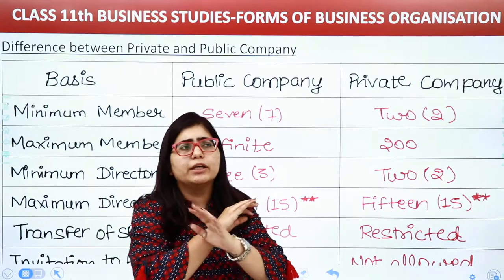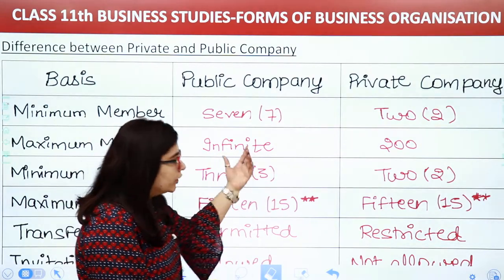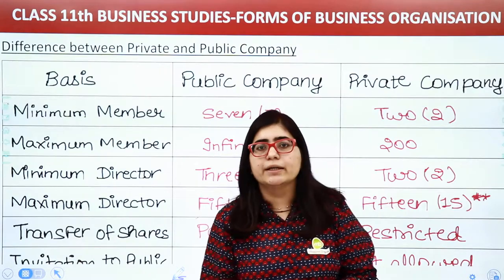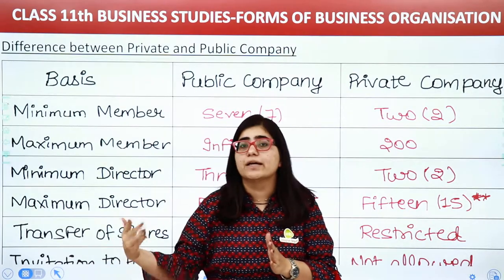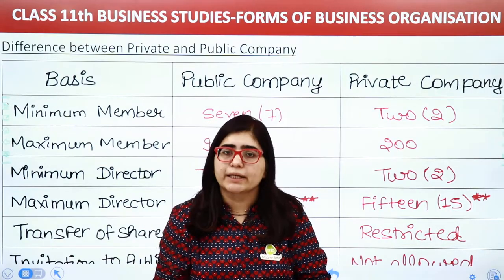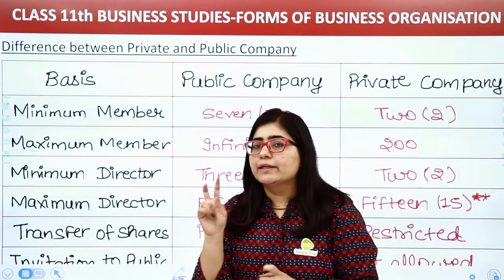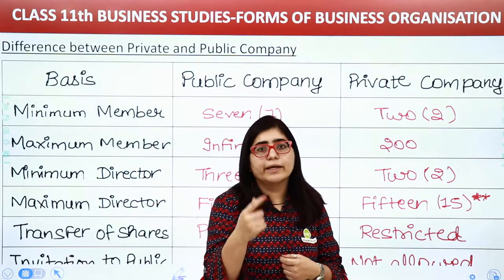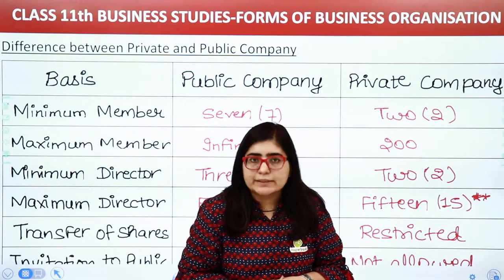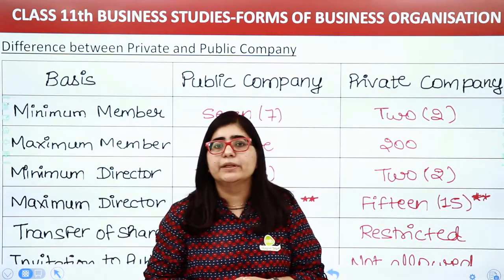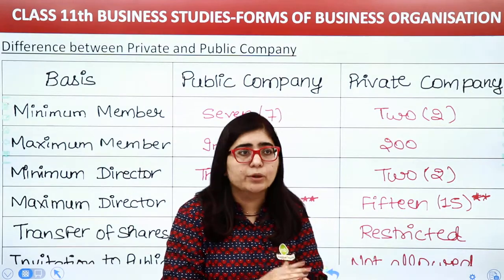A private company can have a maximum of just 200 shareholders. If it goes beyond that, you have to convert to a public company. Under the older Companies Act 1956, the private company's maximum members limit was 50, but under Companies Act 2013 the applicable limit is now 200.